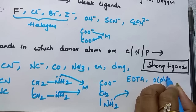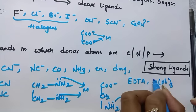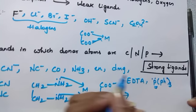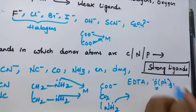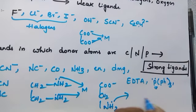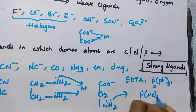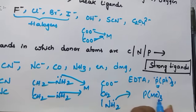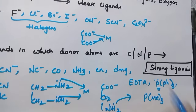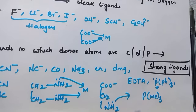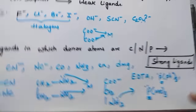Triphenylphosphine (PPh₃) — phosphorus has a lone pair and donates it to the metal. Since phosphorus is the donor, it is a strong field ligand. Trimethylphosphine (PMe₃) is also a strong field ligand because it contains phosphorus as the donor atom.